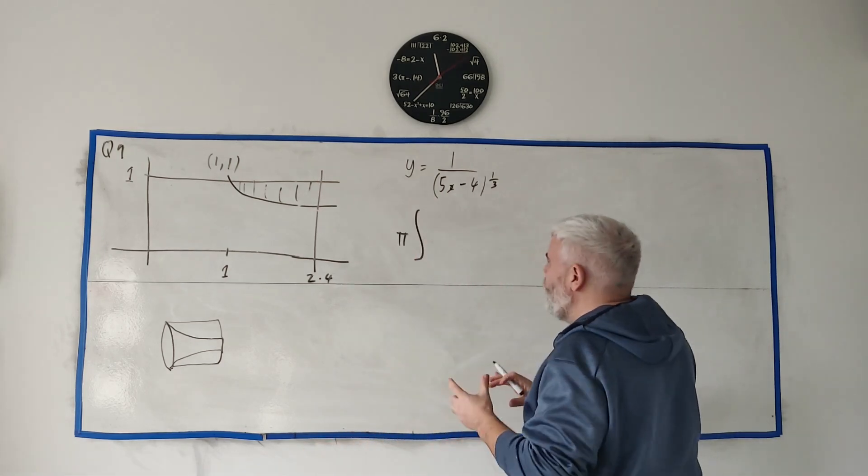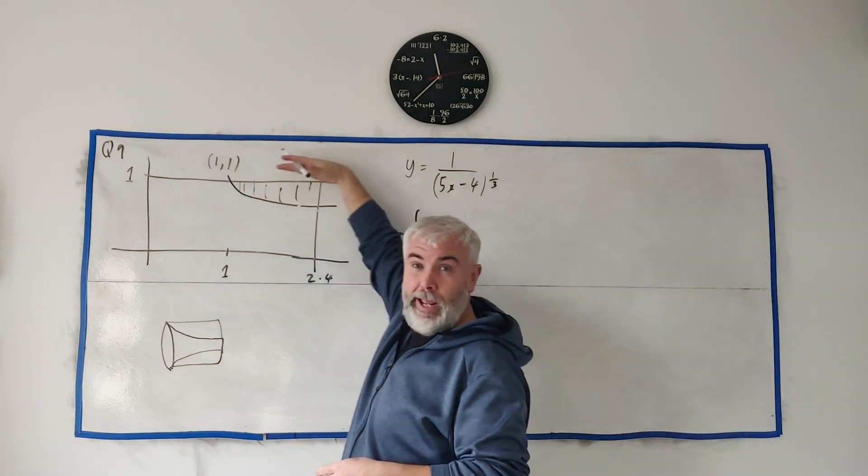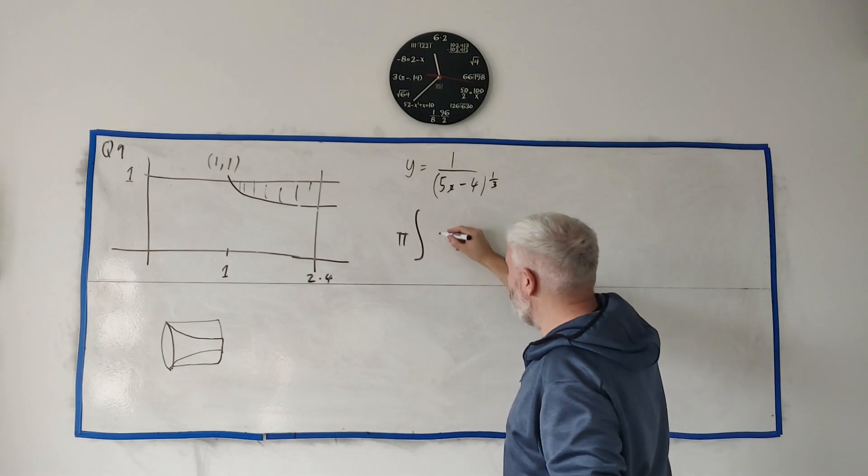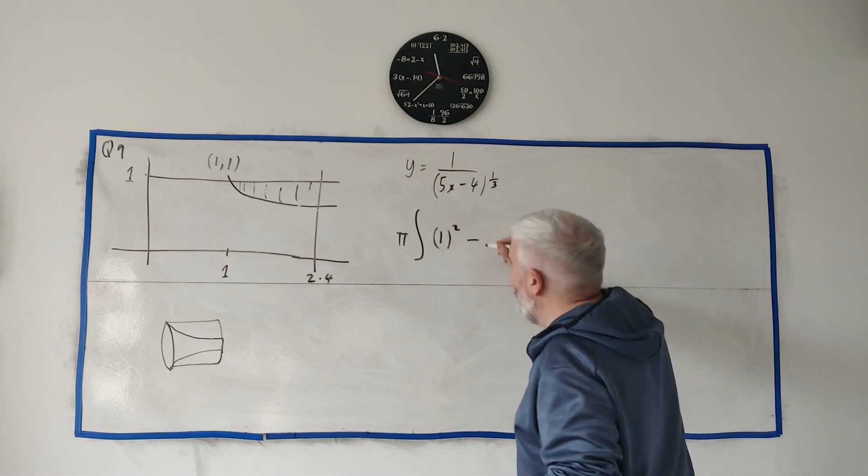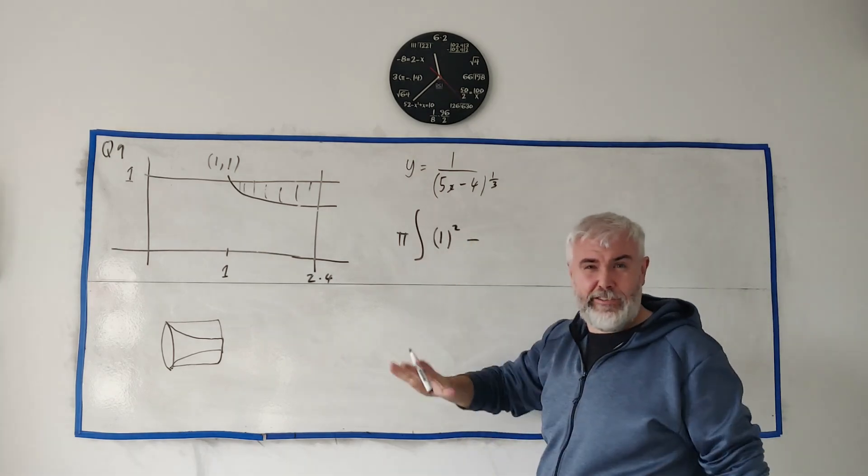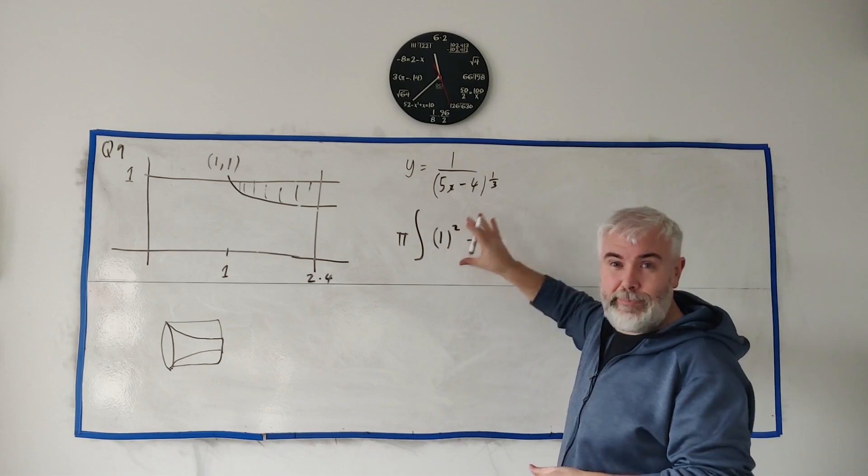But the idea when we have this cut out area is we need the equation of the upper bound - in this case the equation is just y equals 1, so you'll see just 1 squared.